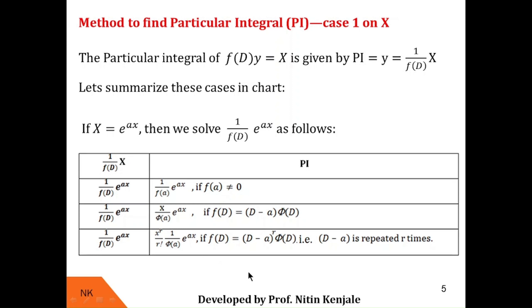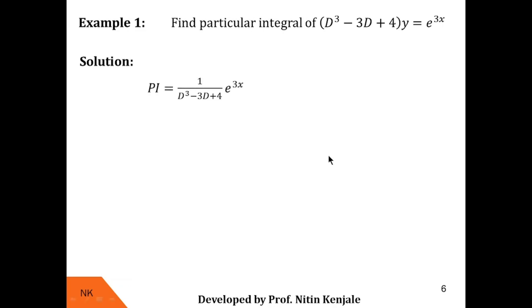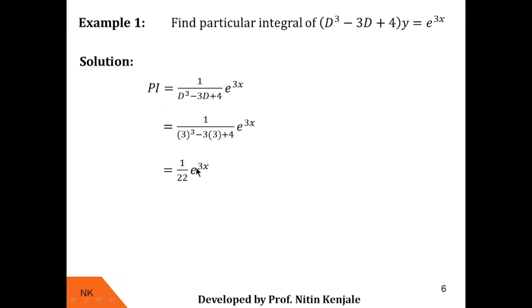Find the particular integral of (D³ - 3D + 4)y = e^(3x). The corresponding particular integral is 1/f(D) of e^(3x), where f(D) = D³ - 3D + 4. We put D = 3: 1/(3³ - 3×3 + 4) = 1/(27 - 9 + 4) = 1/22. So the particular integral is 1/22 e^(3x).